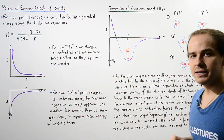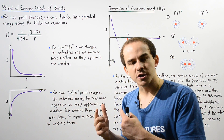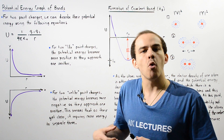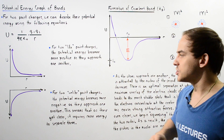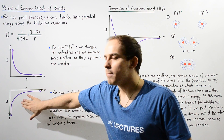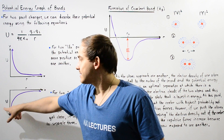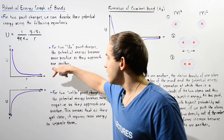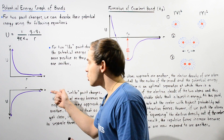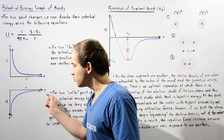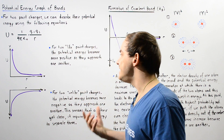This basically means that as the two point charges approach one another, it requires more energy to separate those point charges. That is described by the following diagram, where the Y axis is the potential energy and the X axis is our separation distance R. As the distance decreases, we see that our potential energy becomes more negative.